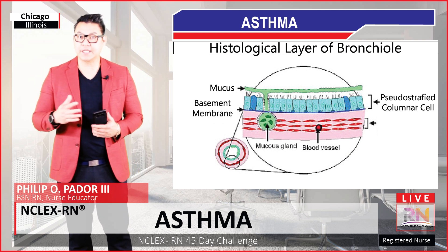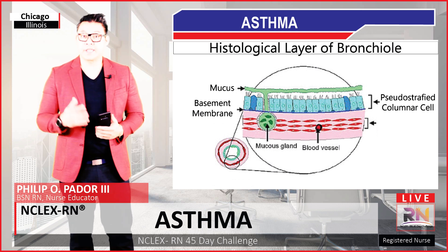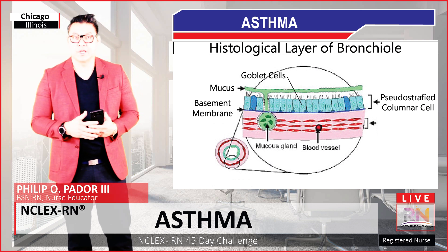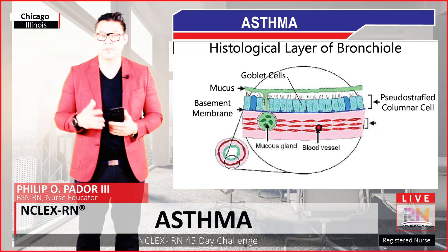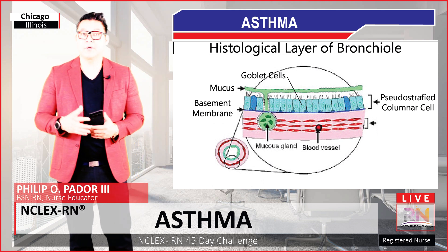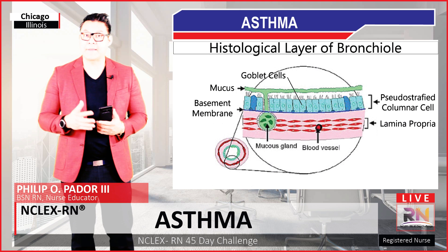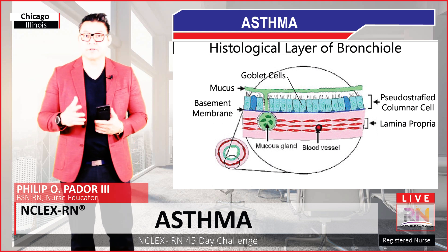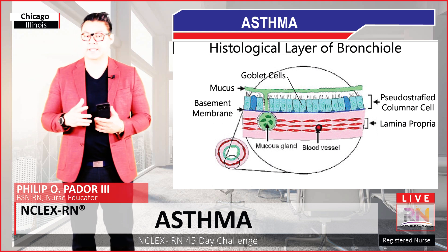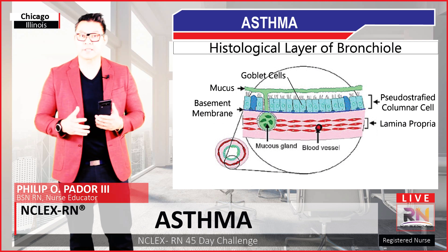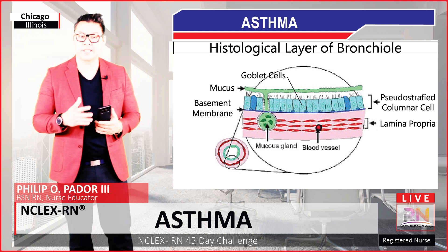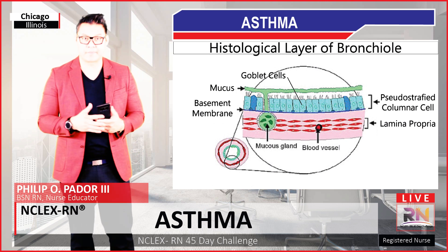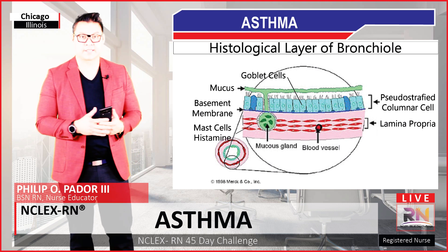Below this, we have the basement membrane. Within the epithelial layers, we also can find goblet cells, which are responsible for secreting mucus into the lumen. Below the columnar cells, we have the lamina propria, which contains many cells including macrophages and mast cells. Mast cells are responsible for secreting histamine. Surrounding the lamina propria, we have the smooth muscle cells.